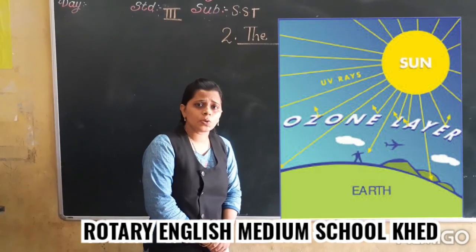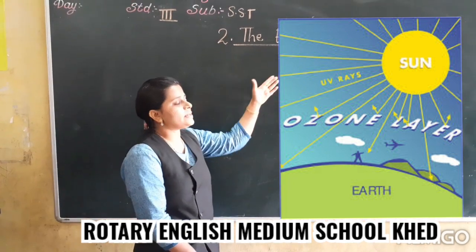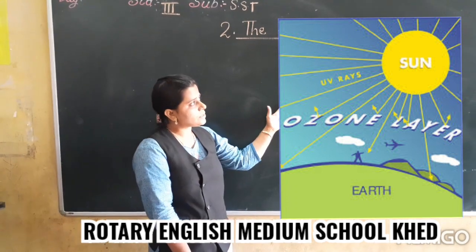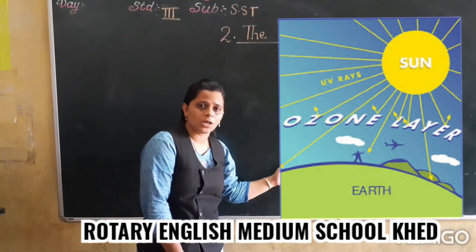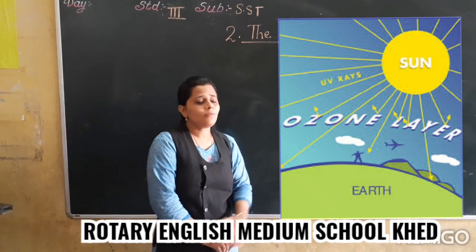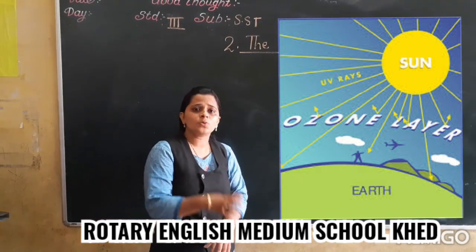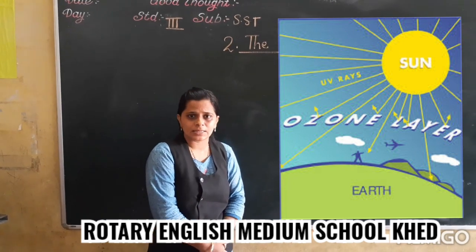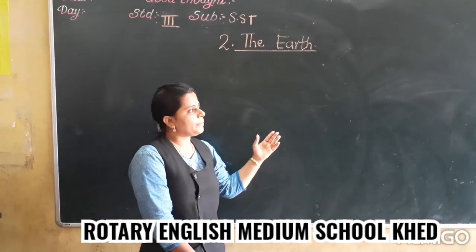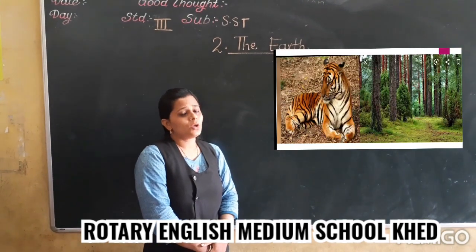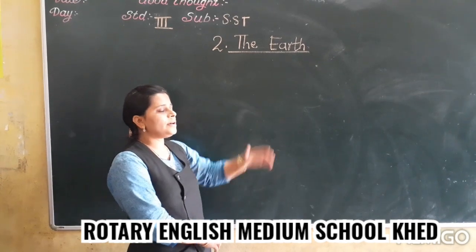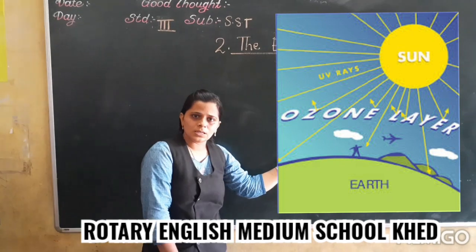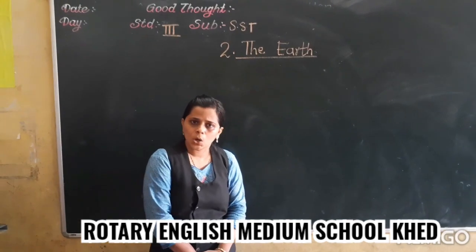Now we will talk about the ozone layer. What is the ozone layer? The ozone layer is a protective blanket on the Earth. It protects us from the harmful rays of the sun. If sun rays directly absorbed into your body, you would face the problem of skin cancer, and even plants and animals could die. So the ozone layer is protecting us from the harmful rays of the sun.